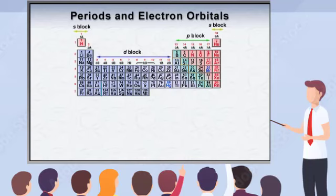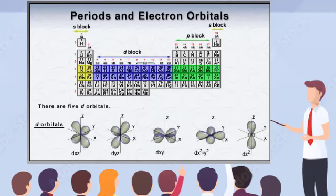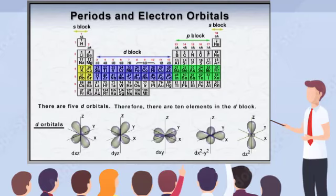Moving back to the periodic table, periods four and five have S and P orbitals for the fourth and fifth energy levels, as well as D orbitals within the D block. There are five D orbitals. Since each orbital can contain two electrons, the filling of the five D orbitals in these periods represents the ten transition metals in the D block.